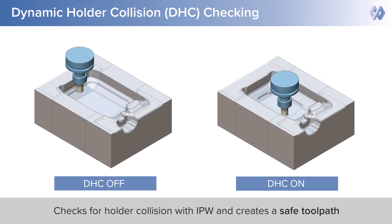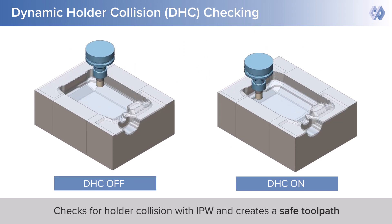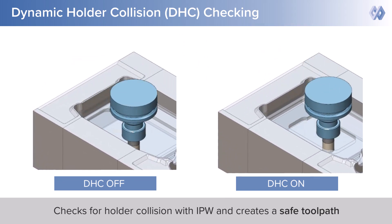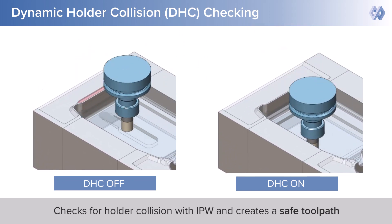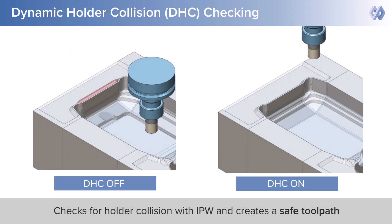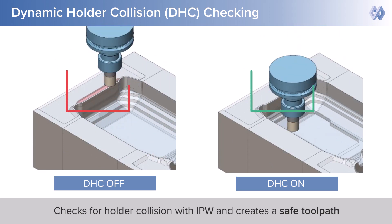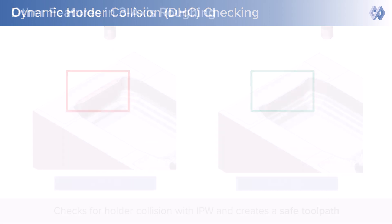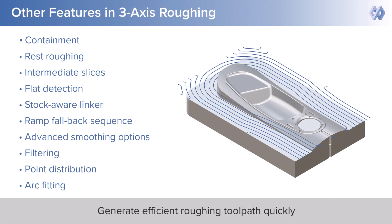The 3-axis solution also provides additional features, for example, dynamic holder collision checking. This feature checks the holder collision with the in-process workpiece and machine surfaces, and creates a safer toolpath if collisions are detected. Similarly, there are many other features in 3-axis roughing.